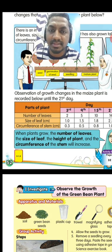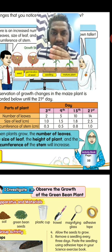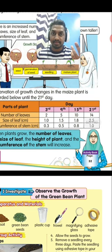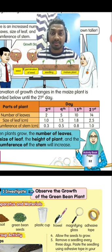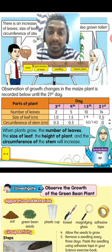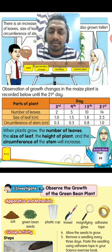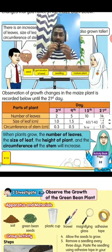If you look at the days in the table, the number of days increases - from the third day, to the ninth day, to the 15th day, to the 21st day. As the number of days increases, the number of leaves and the size of the leaves also increases. And then if you look at the circumference of stem, the circumference of the stem also increases with each day.